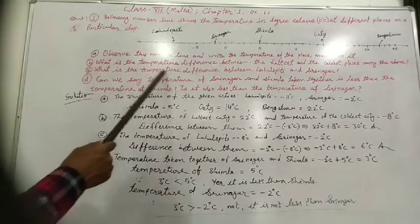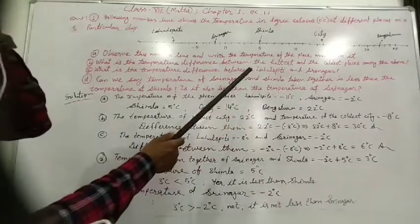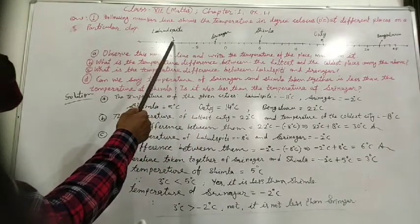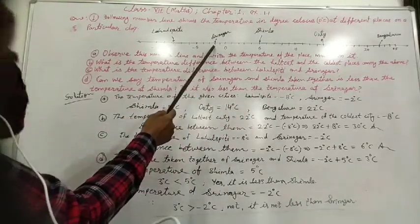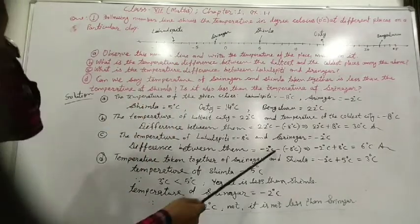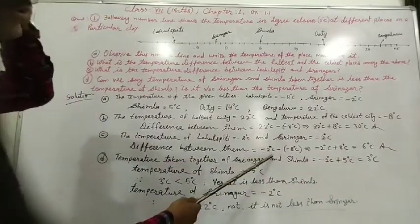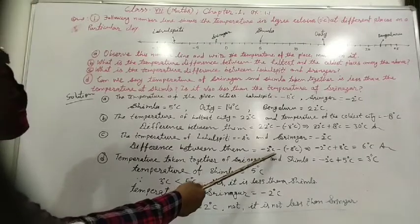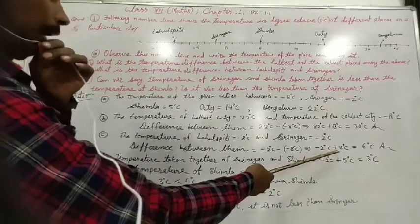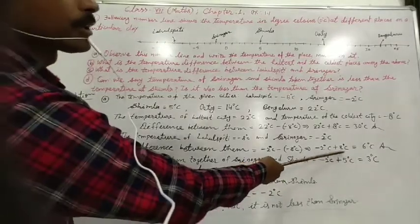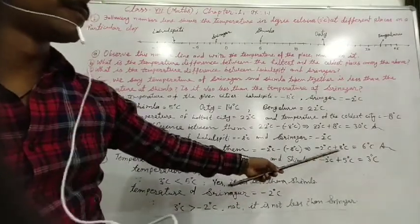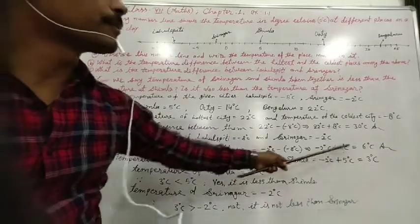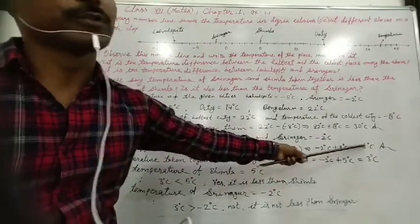Part C: what is the temperature difference between Lahul-Spiti and Srinagar? Temperature of Lahul-Spiti is minus 8 degrees centigrade and temperature of Srinagar is minus 2 degrees centigrade. Difference: minus 2 minus (minus 8) — minus minus becomes plus — so minus 2 plus 8 equals plus 6. Since the larger number 8 is positive, the answer is positive: 6 degrees centigrade.